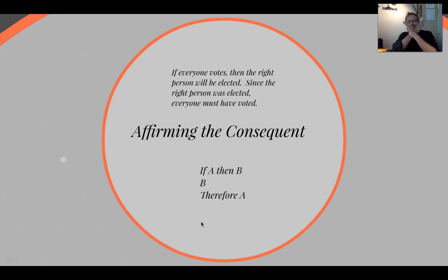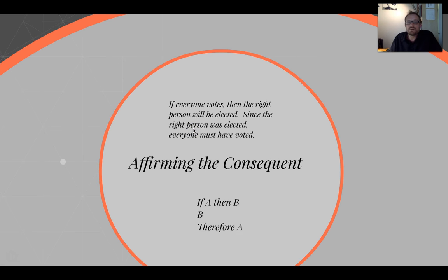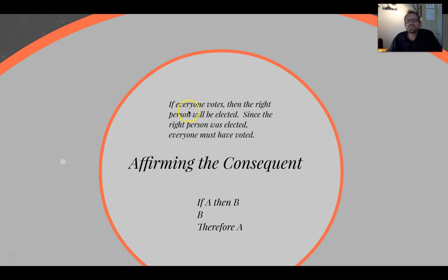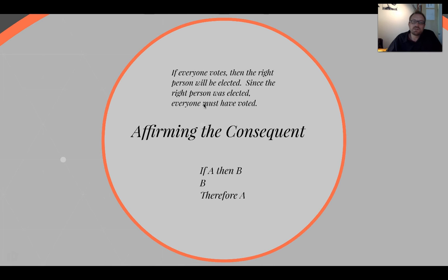Here's another example: If everyone votes, then the right person will be elected. Since the right person was elected, everyone must have voted. That's an affirming the consequent fallacy. If someone made this argument over lunch, you might nod your head and think it makes sense — but it doesn't actually make sense. Not necessarily, right? It doesn't mean the right person won't get elected simply if fewer people vote — that's completely conceivable. You also have to watch out because sometimes you may get this fallacy but the conclusion is true, since in an invalid argument you can still have true premises and a true conclusion. The problem is that the invalidity relates to the lack of necessity between the premises and the conclusion.